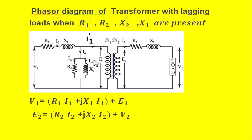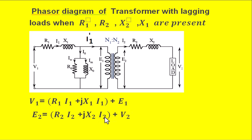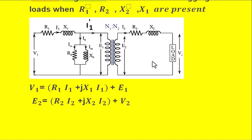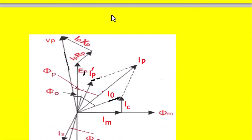The parallel branch has voltage E1 across it. Writing KVL for the primary loop gives: V1 = R1·I1 + jX1·I1 + E1. For the secondary circuit, E2 is the source, giving: E2 = R2·I2 + jX2·I2 + V2. Taking these two equations into account, if we draw the phasor diagram, that becomes our desired phasor diagram.